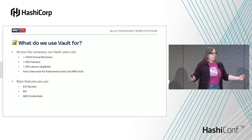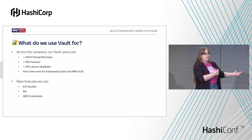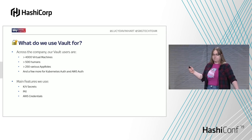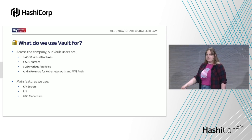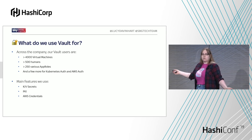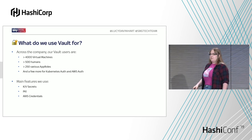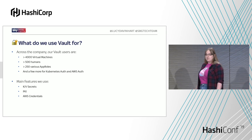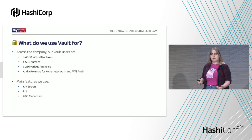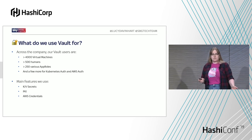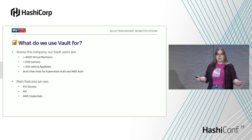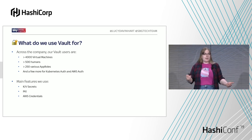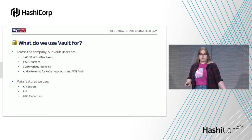People are using Vault. We've got thousands of VMs, hundreds of humans, various scheduled jobs making use of app roles, and several other things using AWS and Kubernetes auth. But we're not doing anything particularly complicated with Vault. For the most part, it's static key-value secrets and a couple of dynamic things like PKI roles and AWS credentials.